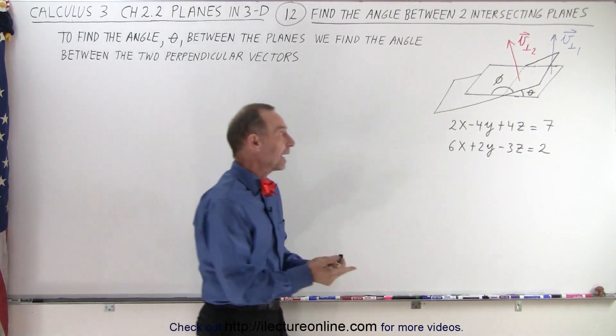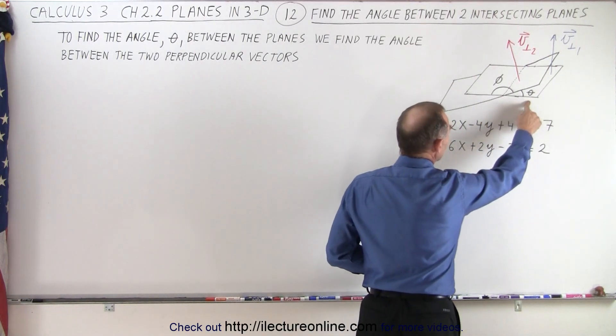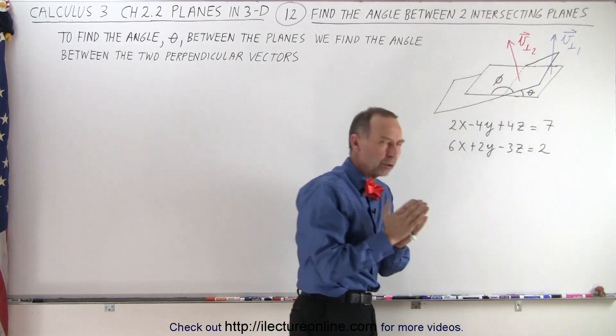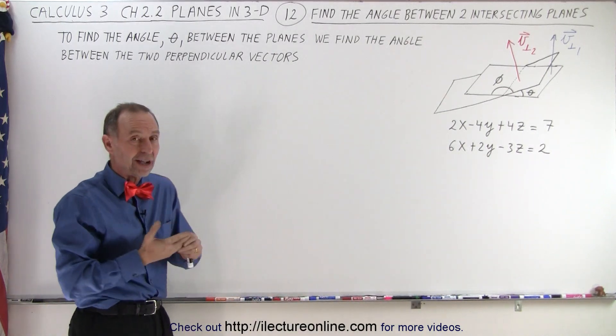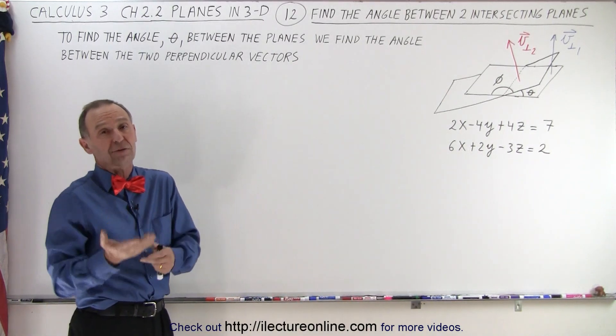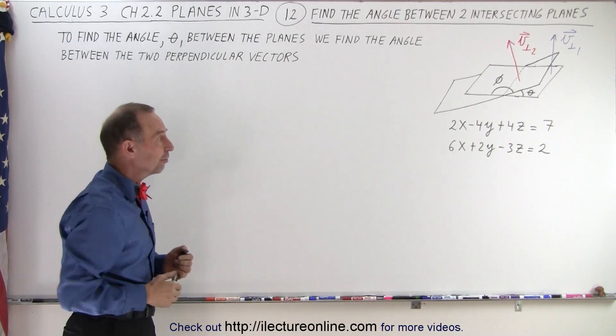Of course, if you look at it, there's really two angles. We can look for the angle theta and we can look for the angle phi. So we want to look for the acute angle. If by chance through the process we find phi, of course we can subtract phi from 180 degrees to find theta.